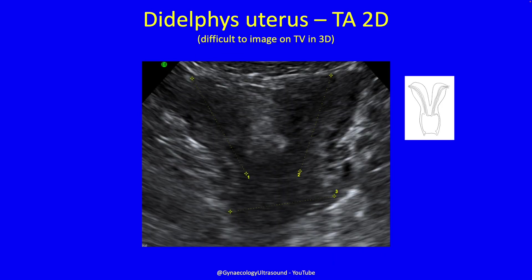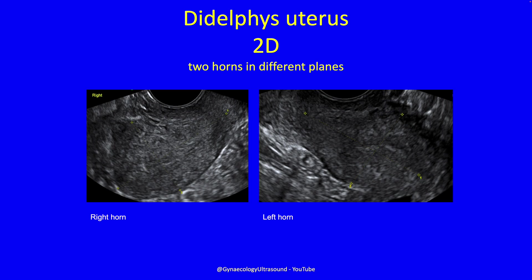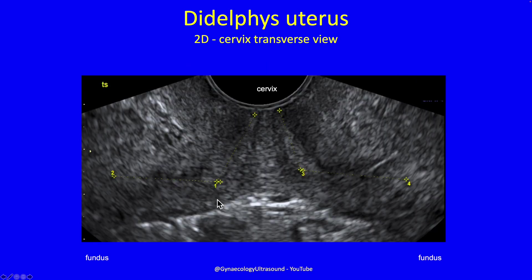A uterus didelphys — this is a transabdominal view. We've got one uterine body here and one uterine body here, and this is a cervical body which will have two cervical canals running through it. Very difficult to image in one go on transvaginal 3D because these horns tend to, like bunny ears, flip out in opposite directions. On 2D ultrasound, to the right of the patient there was a right uterine horn, and to the left a left one. When I specifically looked at the cervix, I could follow the endometrial cavity through to a cervical canal, and the same on the other side. It may be one cervical body on the outside, but you've got two canals and two external cervical os.